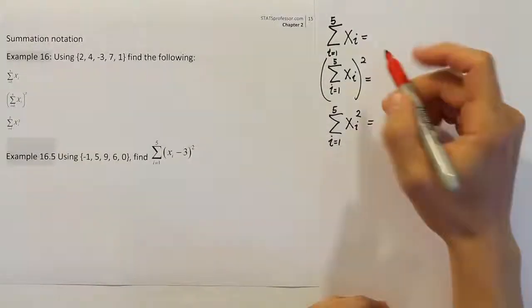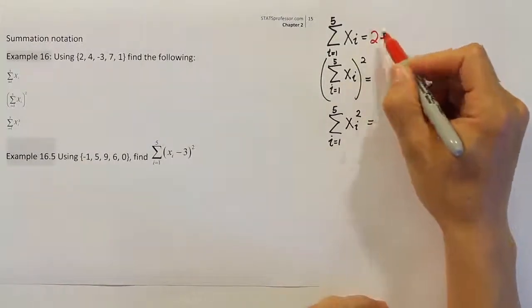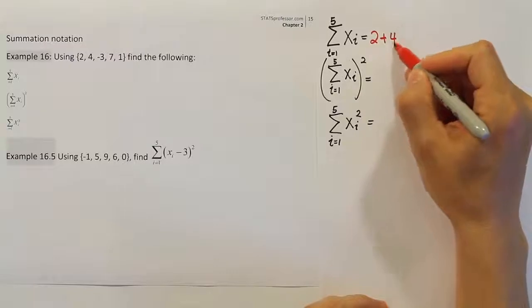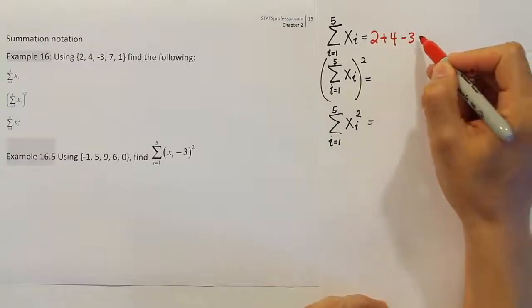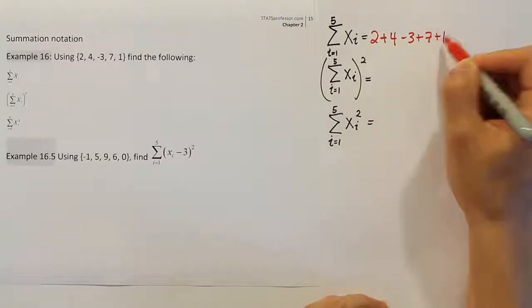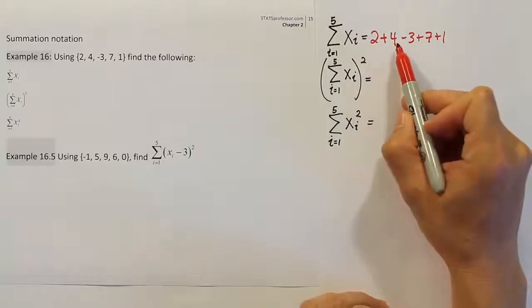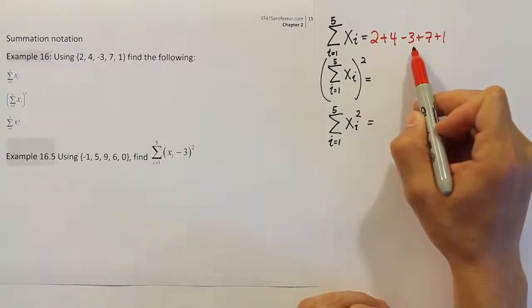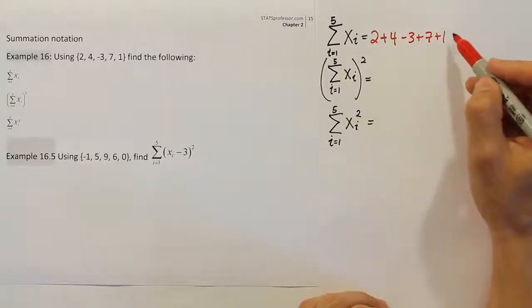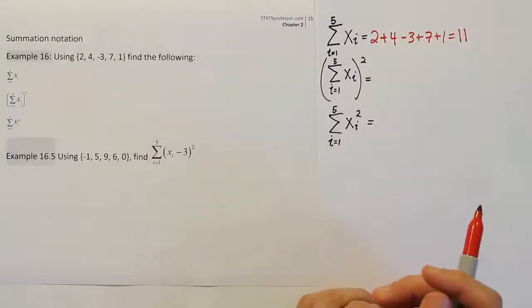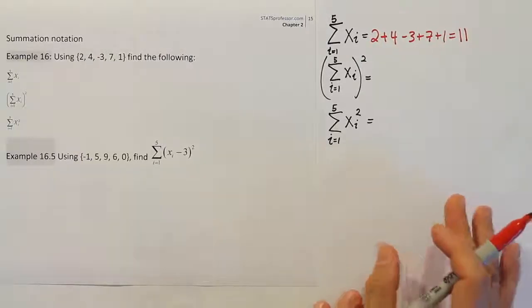I'd have to add 2 to 4 to negative 3 to 7 to 1. And very quickly, 2 plus 4, of course, is 6. Minus 3 is 3. 3 plus 7 is 10. Plus 1 equals 11. So that's the first summation done. So the first answer we get is 11.